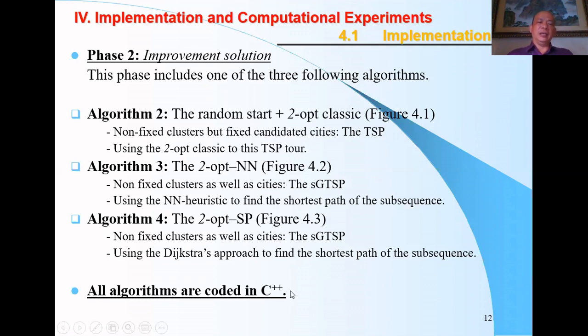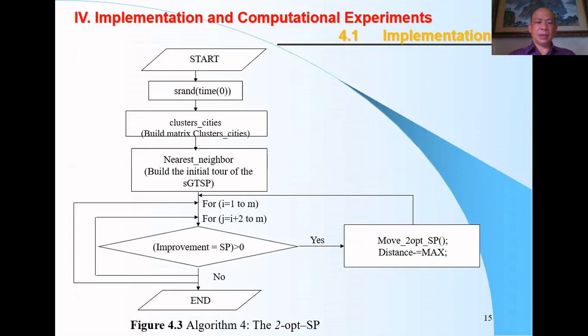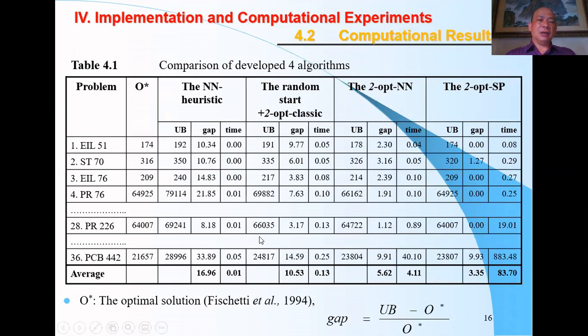All algorithms were developed and coded in C++. After that, we solved 36 symmetric GTSP problems and got the data here. Comparison of the four developed algorithms shows that the 2-opt SP produces the best result.